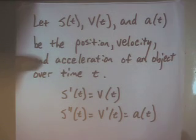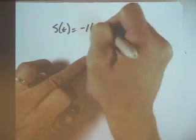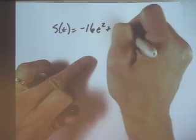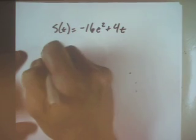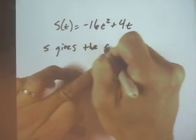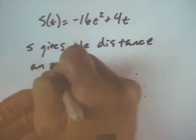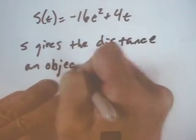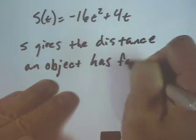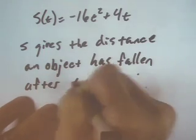Here's an example. Let's consider the function s of t equals negative 16t squared plus 4t, where s gives the distance an object has fallen after t seconds.